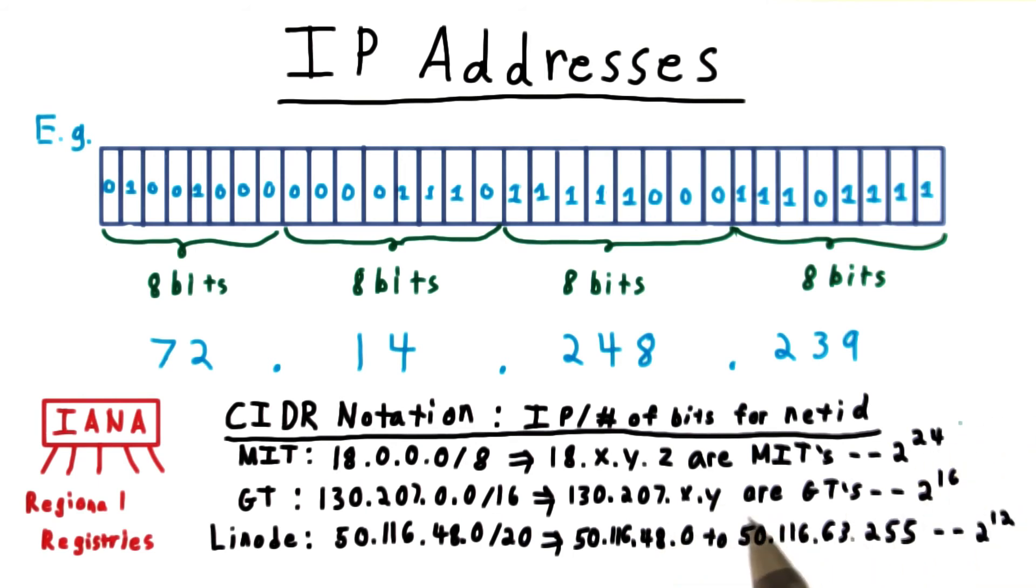IPs have become a precious commodity these days as most all of them have been allocated and not very efficiently. For instance, tech savvy as they are, MIT is probably not using all 2 to the 24th or 16 million of its addresses.